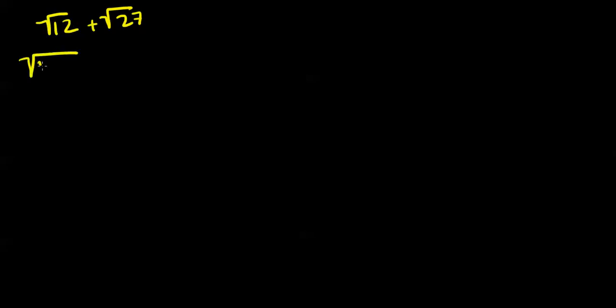Now we're going to look at another example where we simplify before adding or subtracting. We have the square root of 12 plus the square root of 27. We want to simplify radical 12 first — what number times what number gives us 12? You want to think of perfect square numbers, so we do 4 times 3 because 4 is a perfect square. And for 27 we do 9 times 3 because 9 is a perfect square.